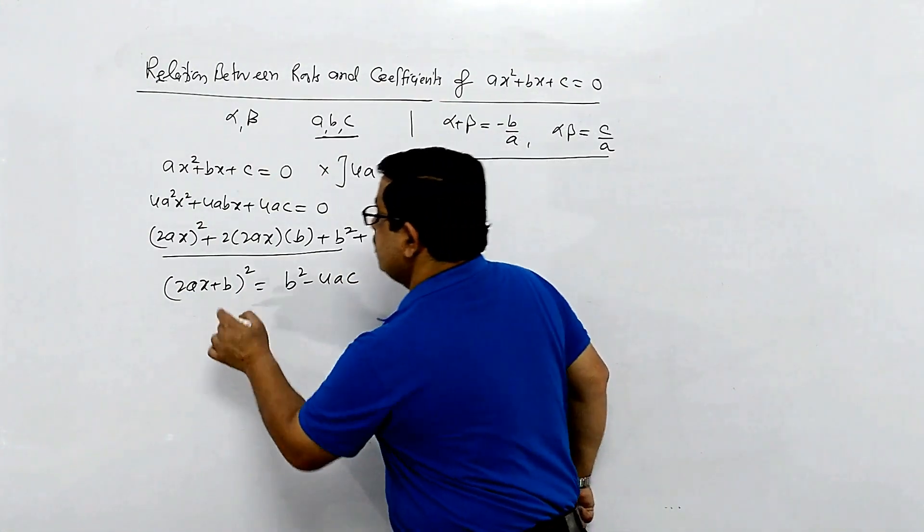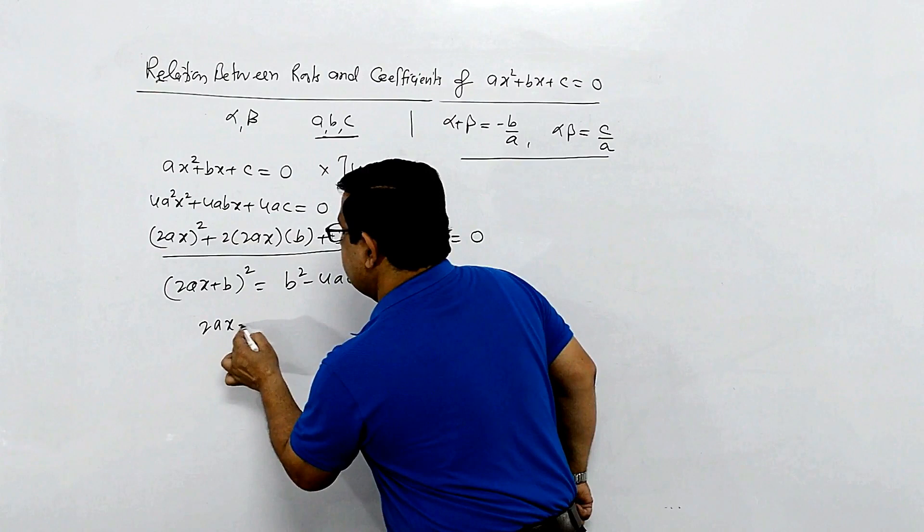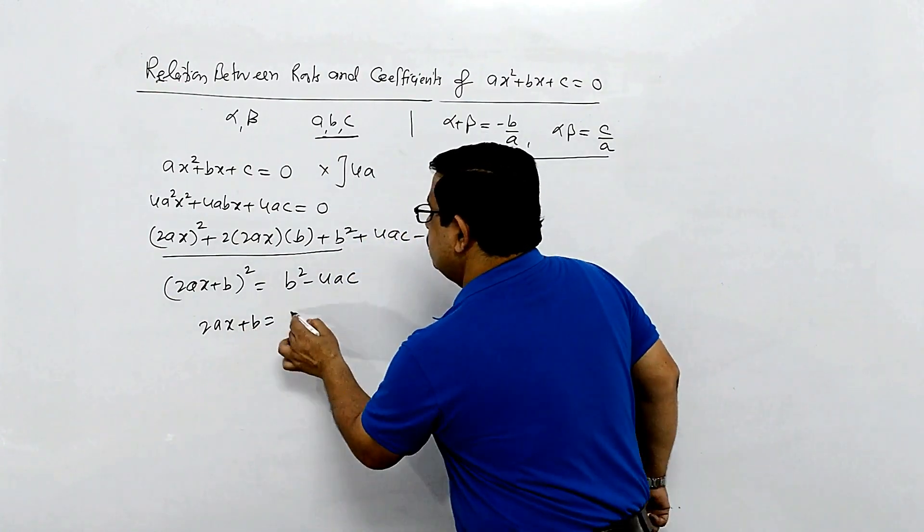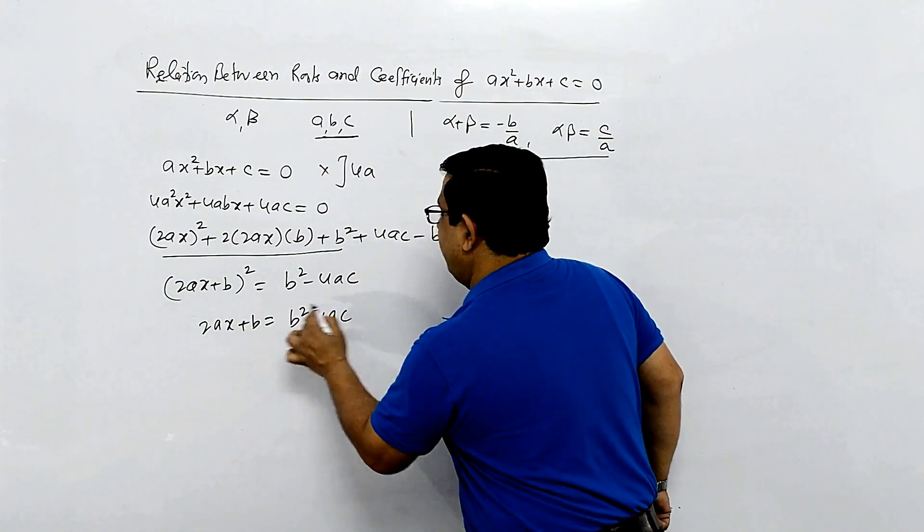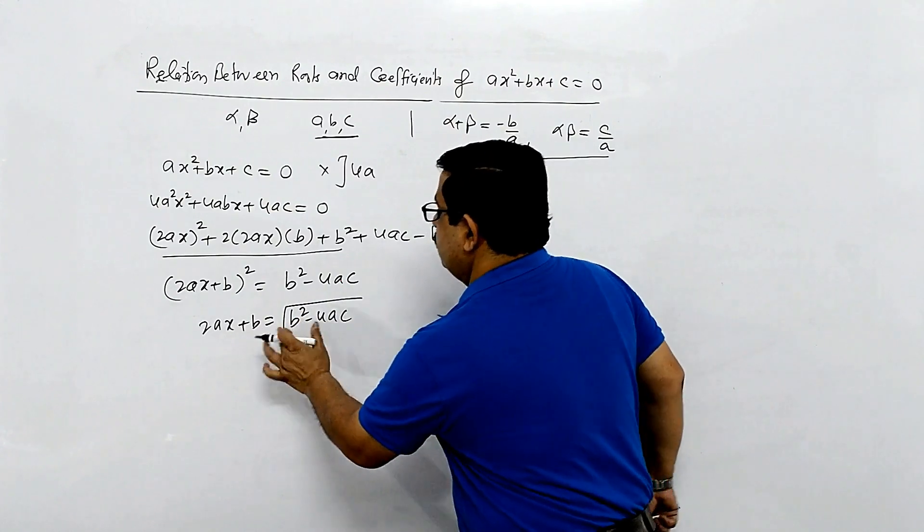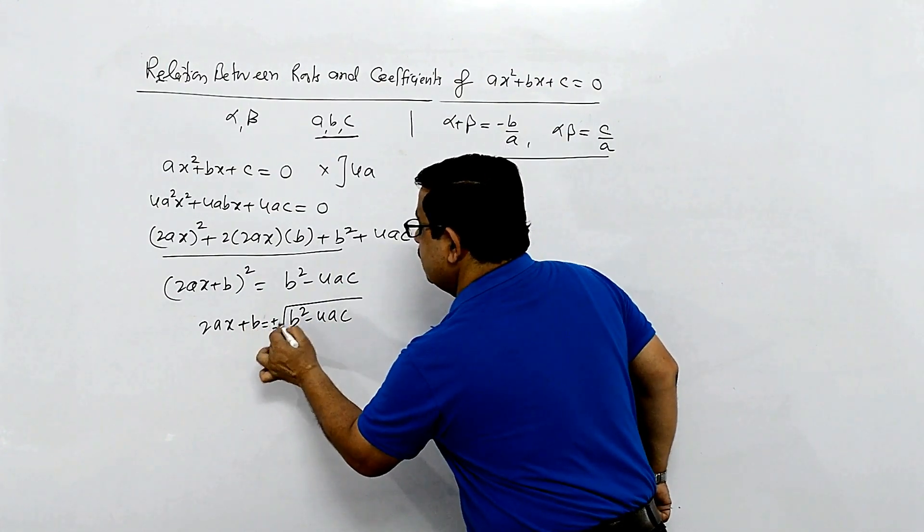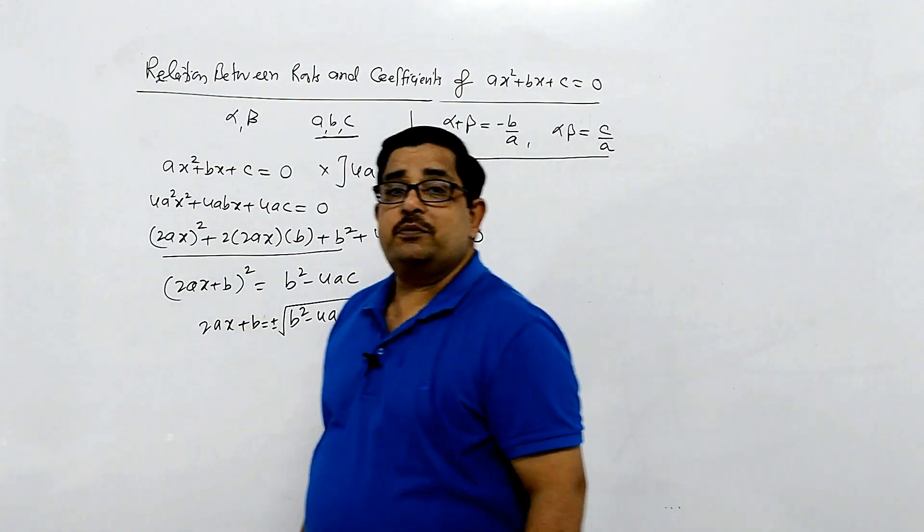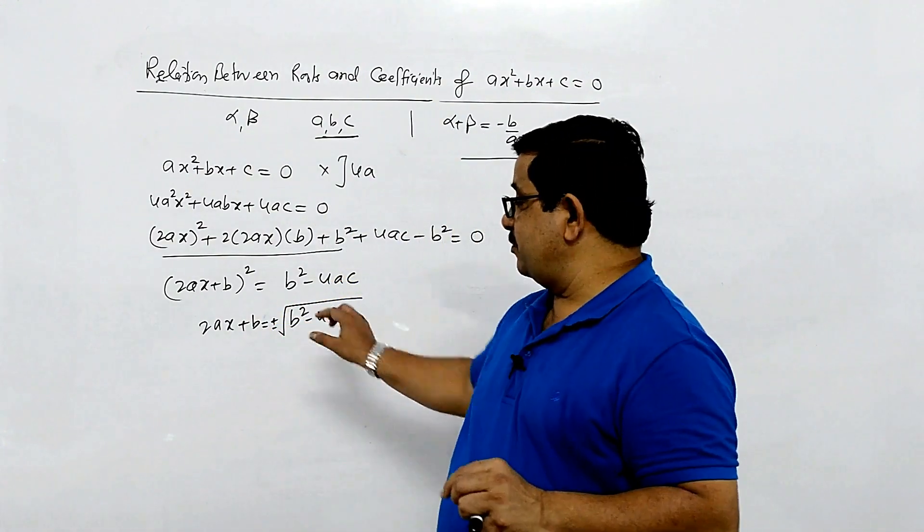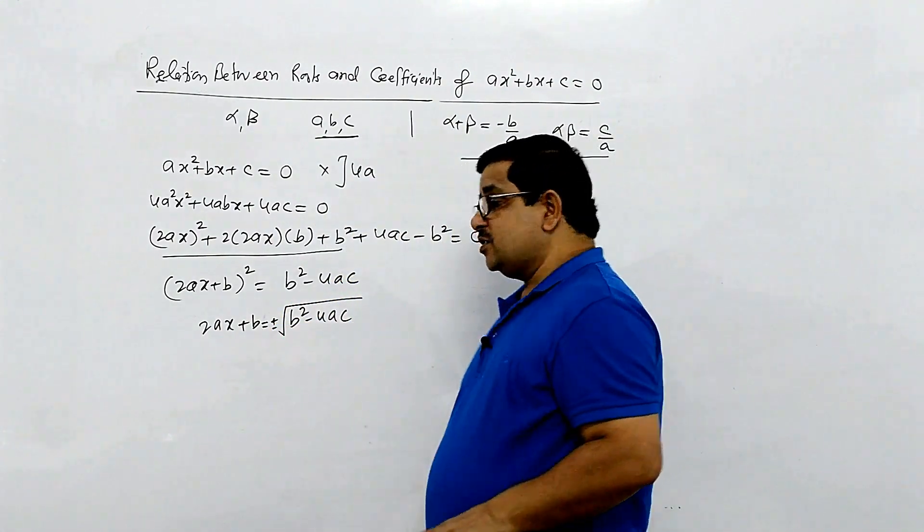Now taking the square root on both sides, we get 2ax plus b equal to plus or minus the square root of b square minus 4ac. When we take the root, we need to put plus minus sign on one side.